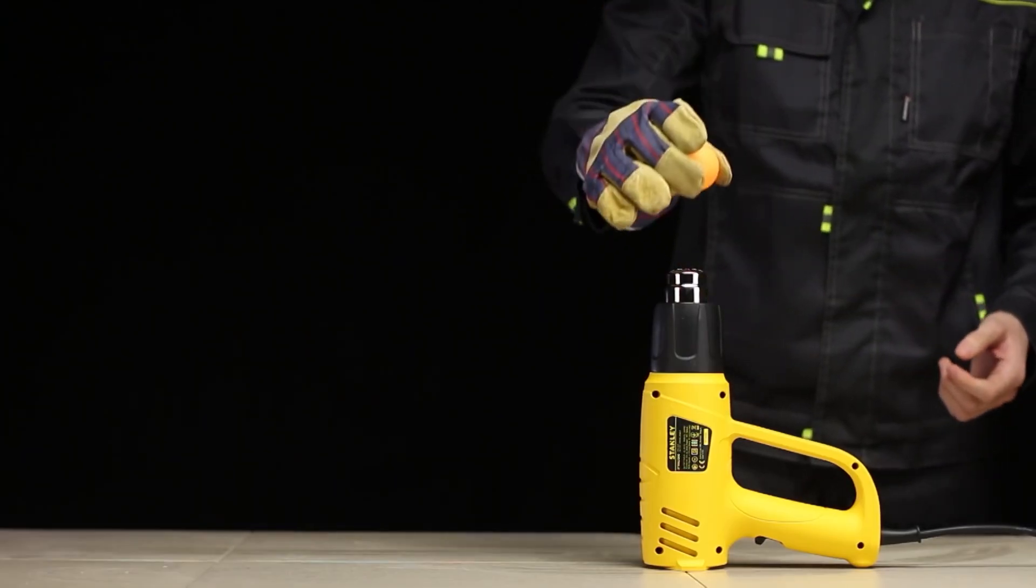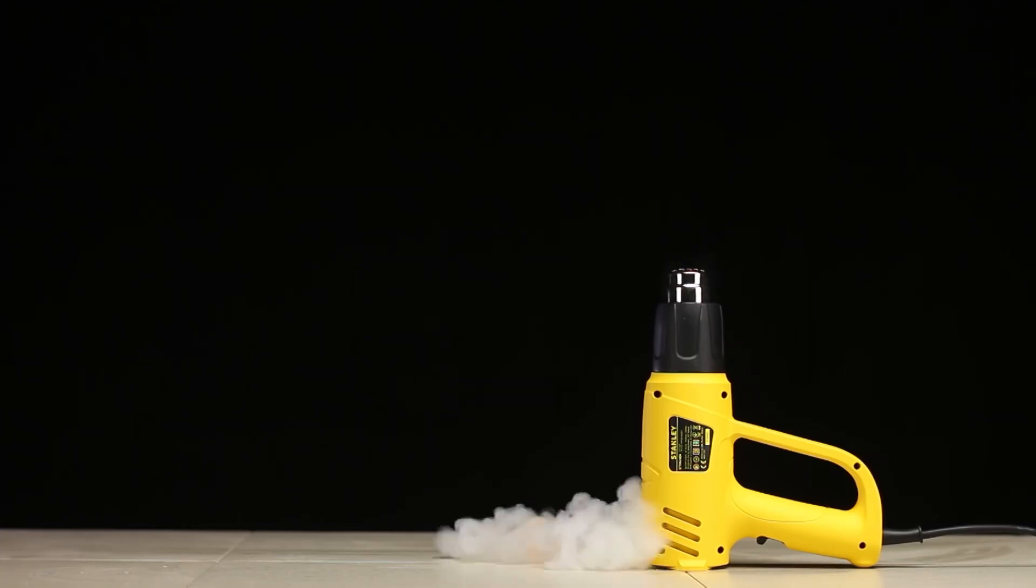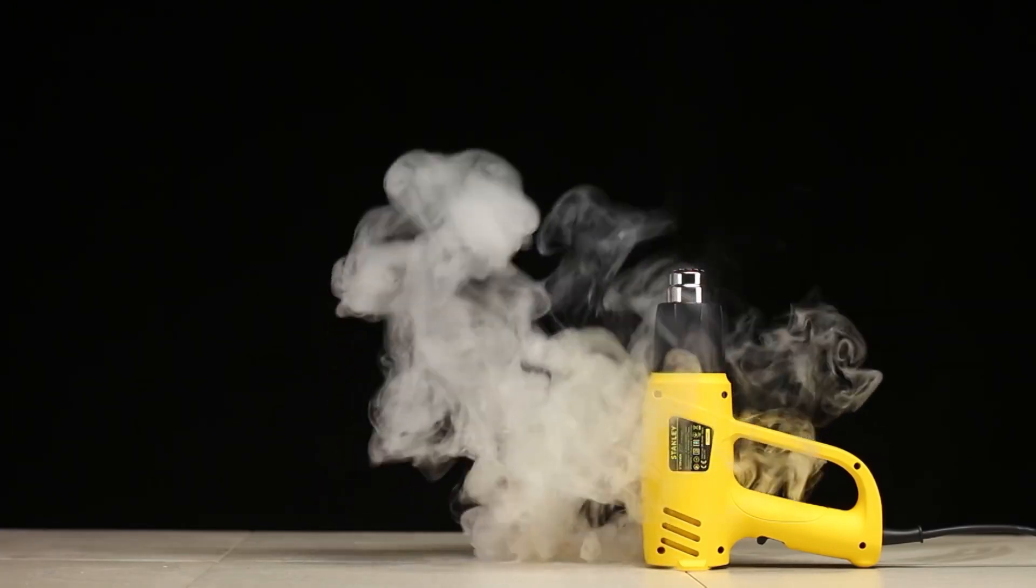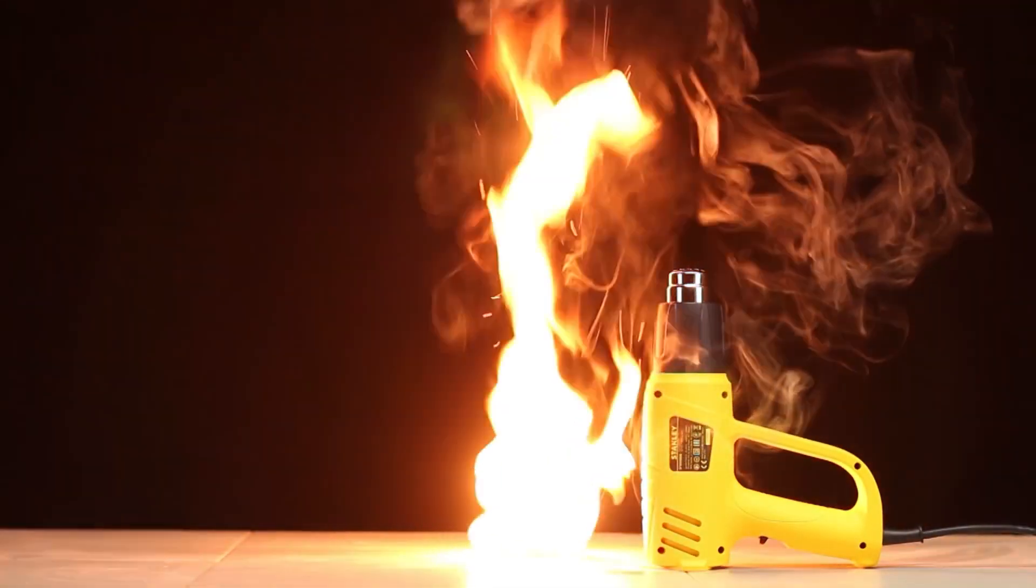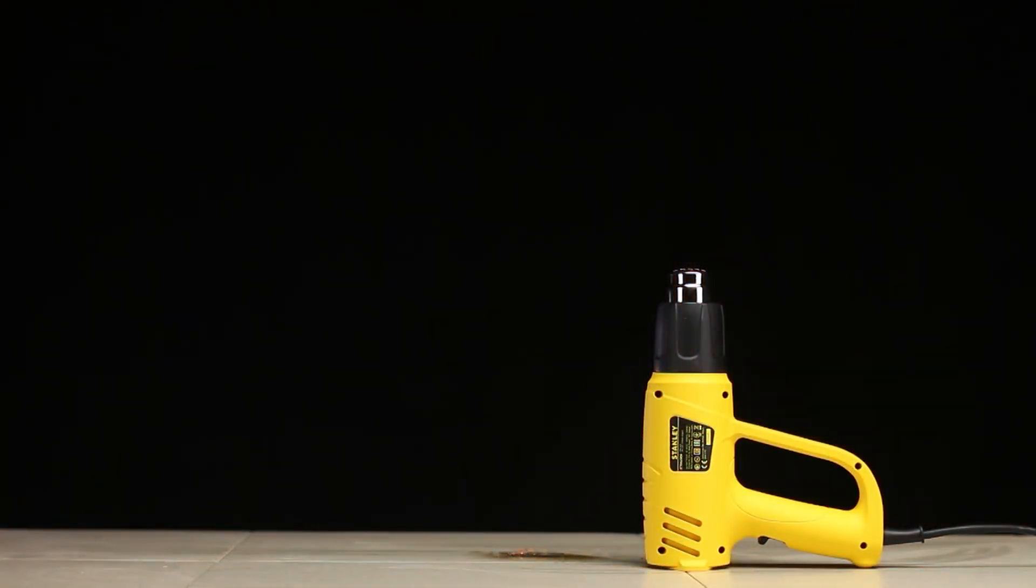To begin with, we will direct the hairdryer to the ceiling and leave the ping pong ball in its airflow. At first, it moves in the same way as with a regular hairdryer, but suddenly it begins to deform quite rapidly. Finally, the ball falls on the table and begins to smoke heavily, and then a huge bright flash of flame, though only for a second.